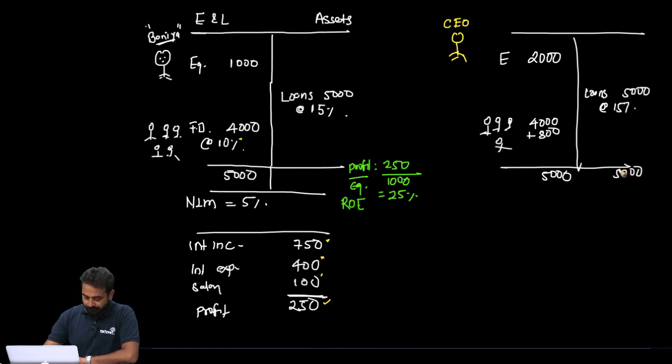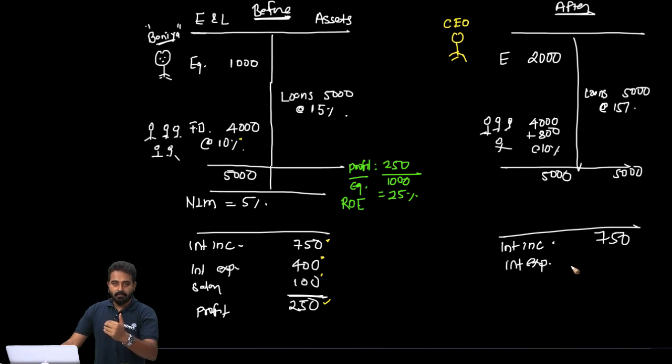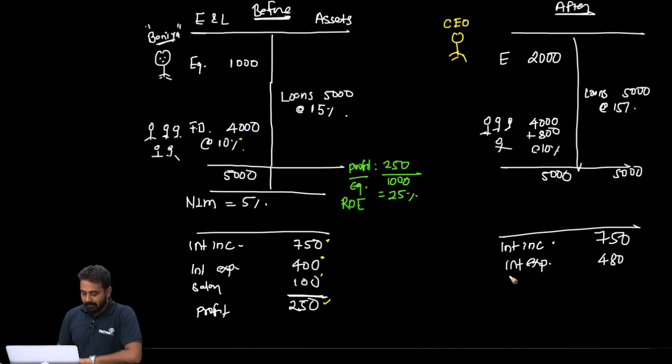Now again, the same story: loans 5000 at the rate of 15%. So this is 5000. Now let's make an income statement. So I'm going to call this scenario as before and this scenario as after. So now interest income, how much? 750. Interest expense, how much? Is it going to be 400 now? No, it's going to increase. Why? Because now we have to pay interest on that 4800. So interest expense is now 480. Salary expense, how much? 100. So how much profit are you left with? 170.